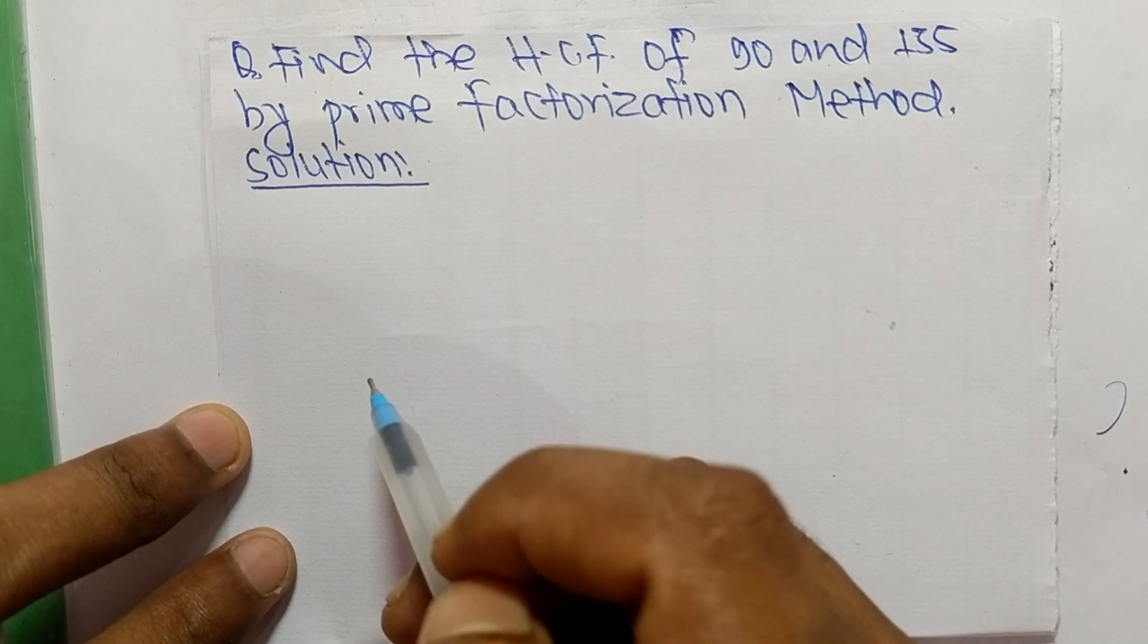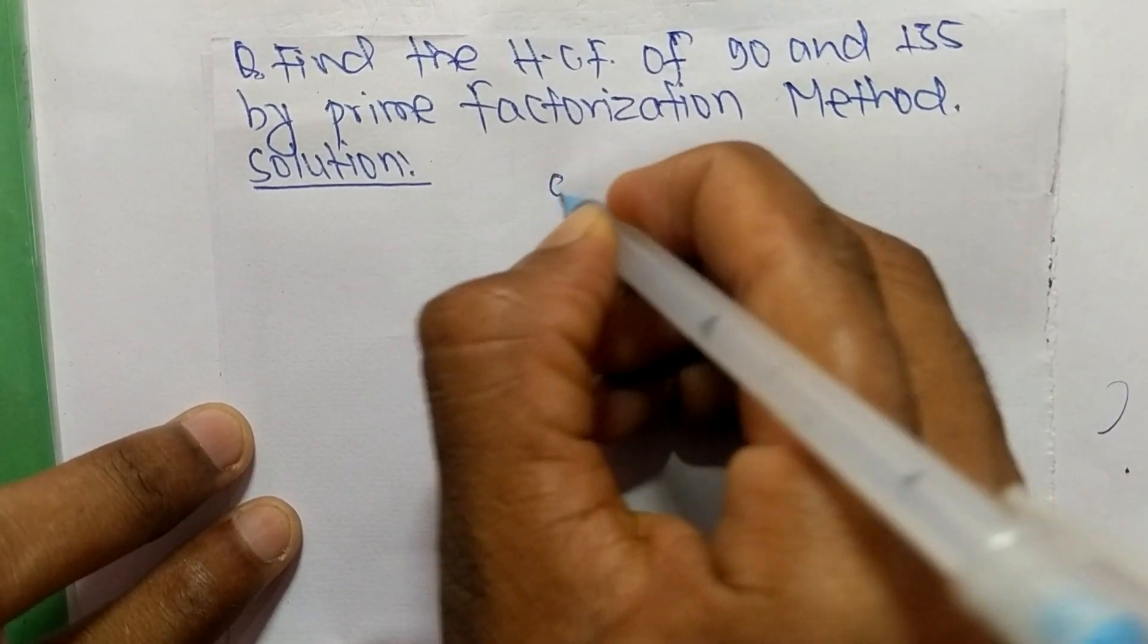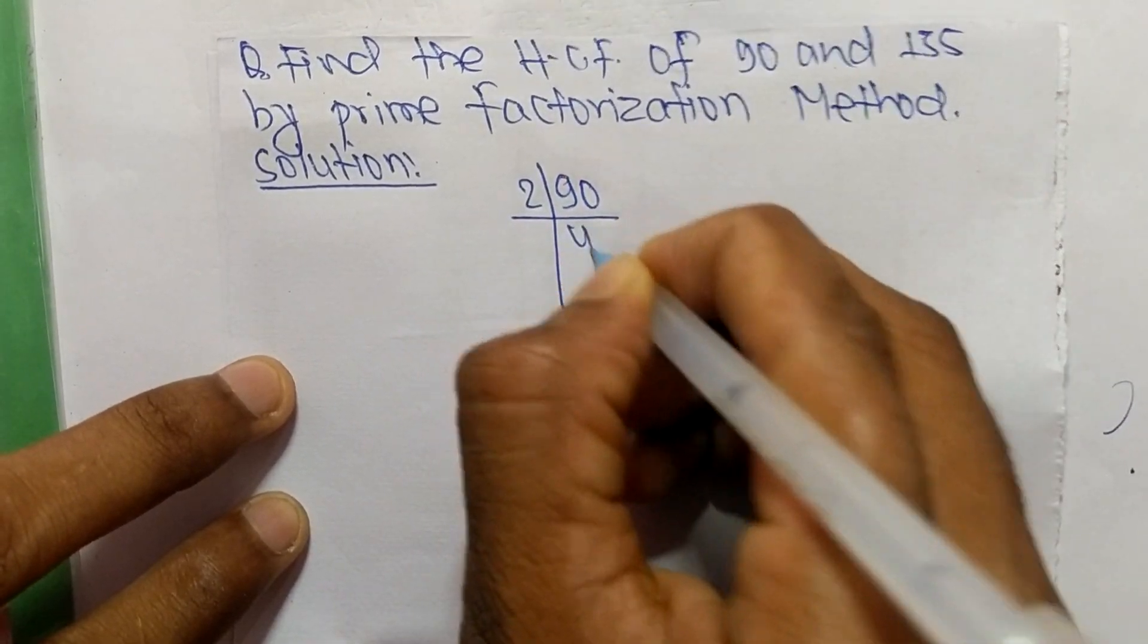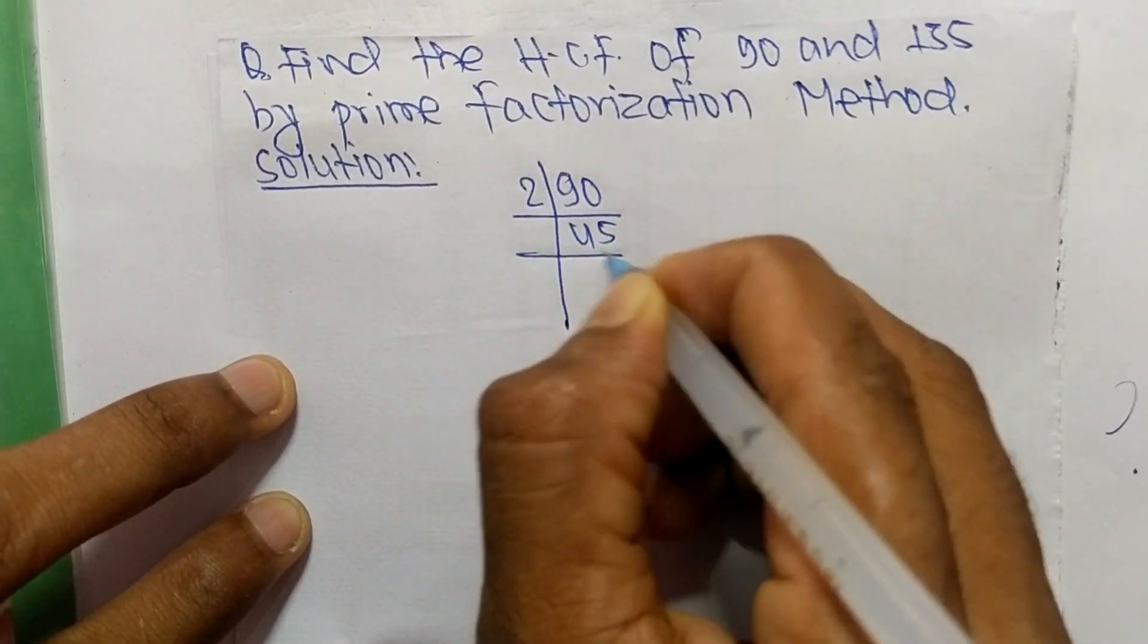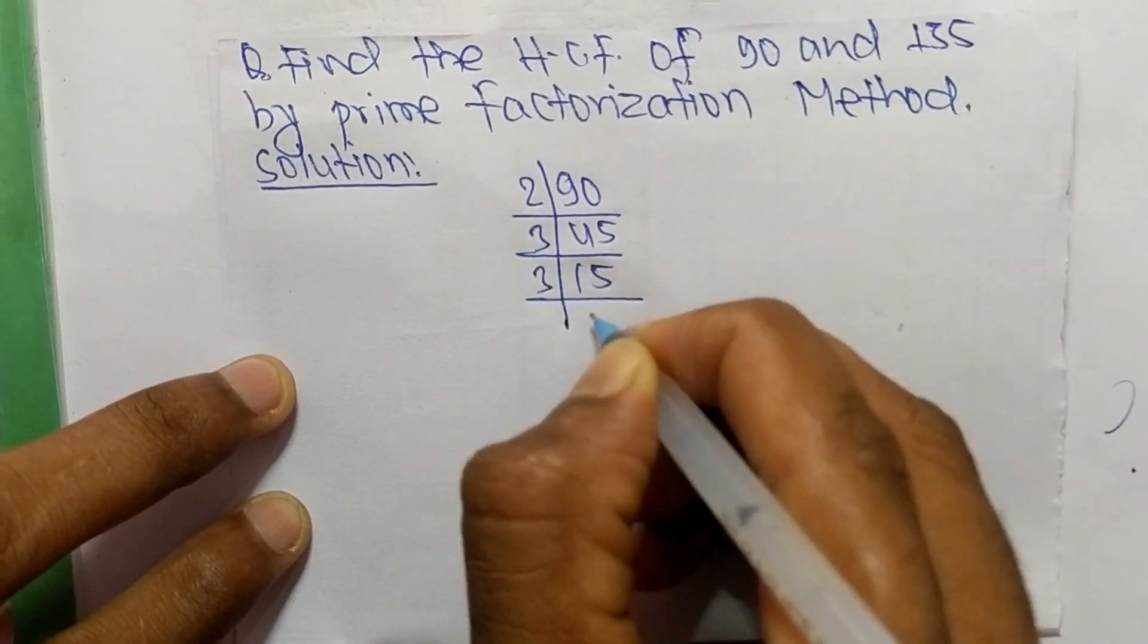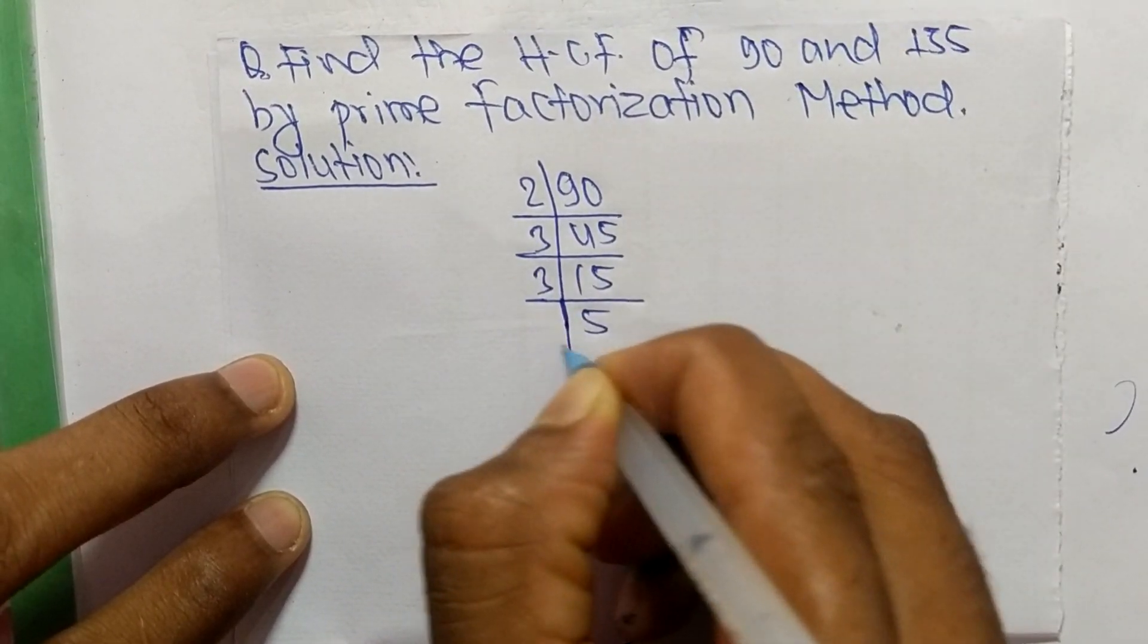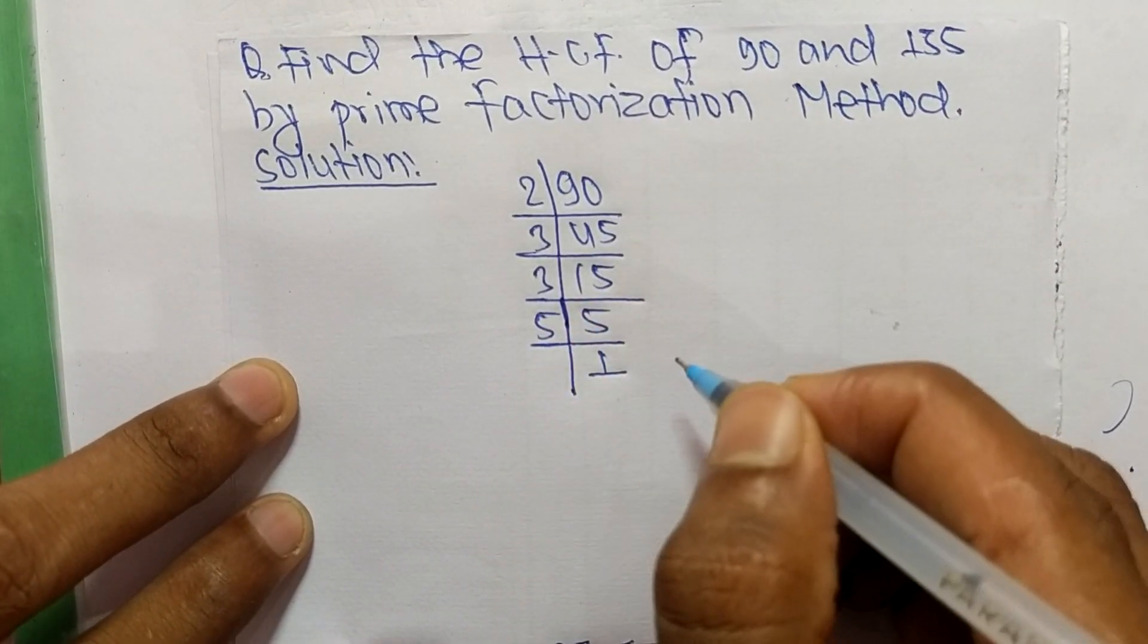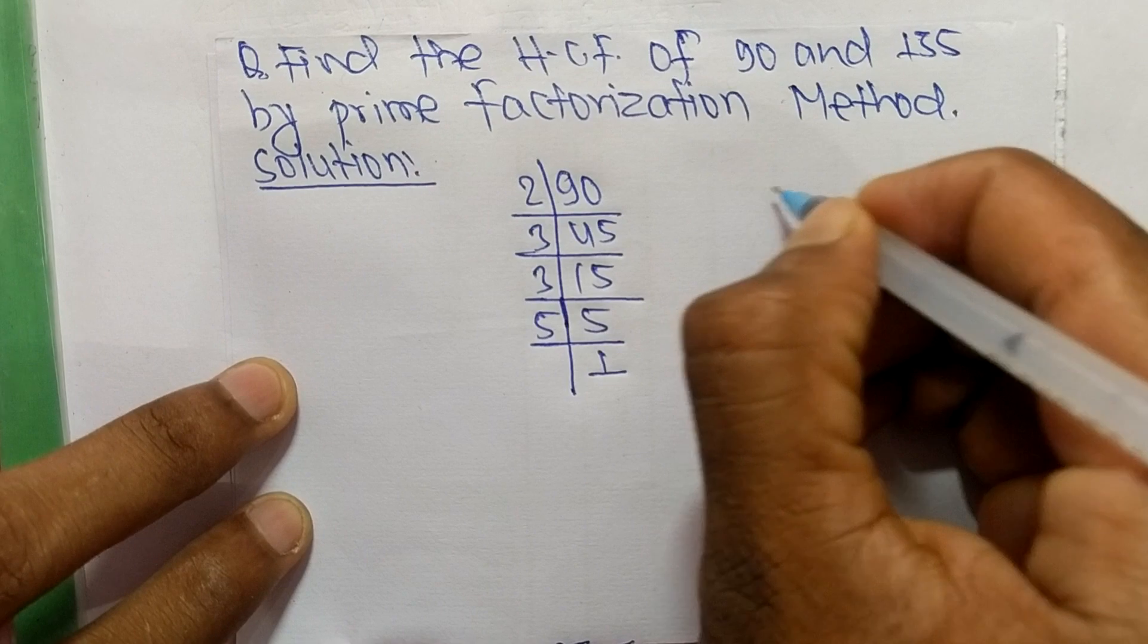So first we find out the prime factors of 90. So it is 2 times 45 mean 90, 3 times 15 mean 45, 3 times 5 mean 15, and 5 times 1 mean 5.